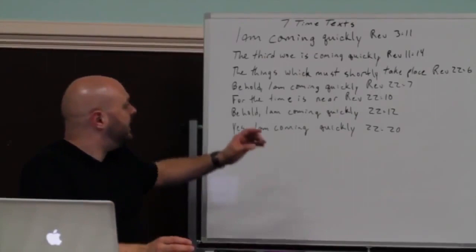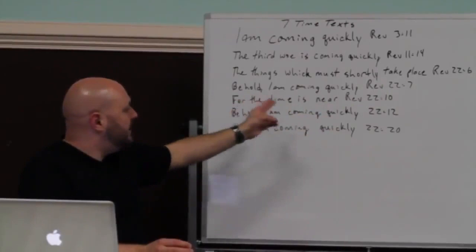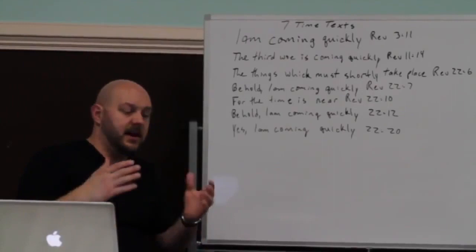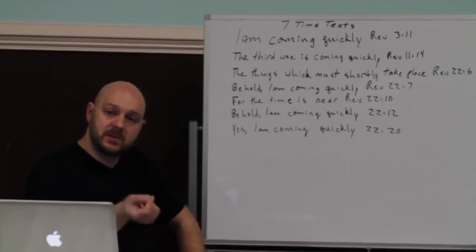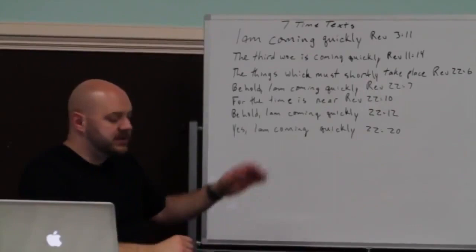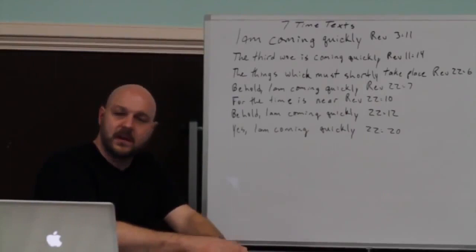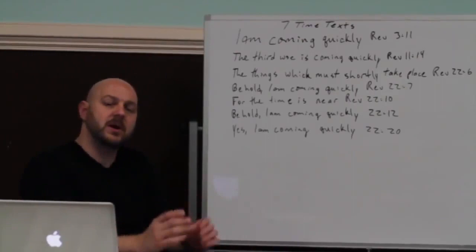That's why it says it will shortly take place. That's why it says the time is near. It doesn't only use the word quickly in reference to thinking like he's going to come in here really, really fast. When he comes, he comes, but this timing text is saying it's going to happen soon. Some of yours are translated soon, which is a much better translation because when John writes it in the 60s AD, he writes the book of Revelation about what's going to happen within 10 years. It was soon.